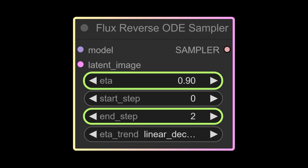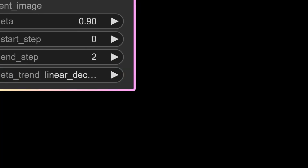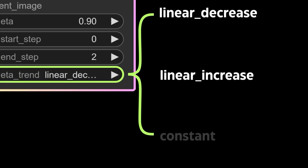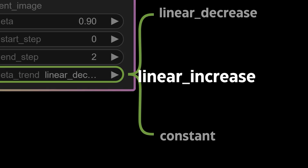Now let's talk about the ETA trend parameter, which offers three options: linear decrease, linear increase, and constant. What we've talked about so far is linear decrease, which is the default option — in most cases it works just fine. With linear increase, you'll notice that the composition of the image stays mostly the same, but the biggest difference is in the lighting. If your main goal is to adjust the lighting, linear increase is a great option. Finally, with the constant setting, ETA has the most influence, but the people or subjects in the image become less relevant. If your focus is on adjusting lighting, constant isn't the best choice since it shifts more control to other areas.